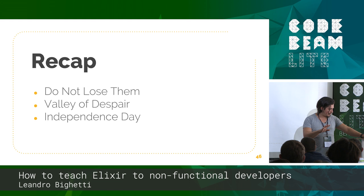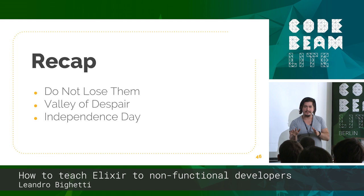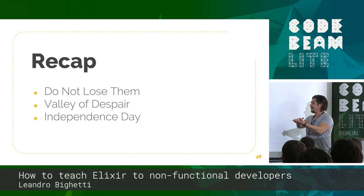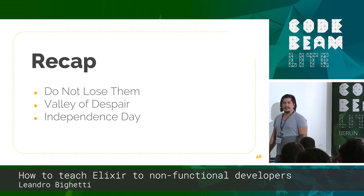So, to recap. First of all, we have to not lose them — show them that it's not only about concurrency, that Elixir is good for other things. Productivity is one I like. After they start, they usually plummet down, and we have to help them stand along and get them through that. And once that happens, they need to learn the core skills so that they can walk on their own.